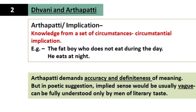Next: Dhvani and Arthapadi or Implication. This is knowledge from a set of circumstances — Circumstantial Implication. When a sentence is uttered in a circumstance, the context decides its meaning. For example: 'the fat boy who does not eat during the day' — since he is fat but doesn't eat during the day, we assume he eats at night. This is Arthapadi. What makes Dhvani different is that Arthapadi demands accuracy and definiteness with a logical reason behind what we assume, whereas in the case of poetic suggestion it's all part of creativity and imagination and can only be understood by men of literary taste — it need not be logical or accurate.